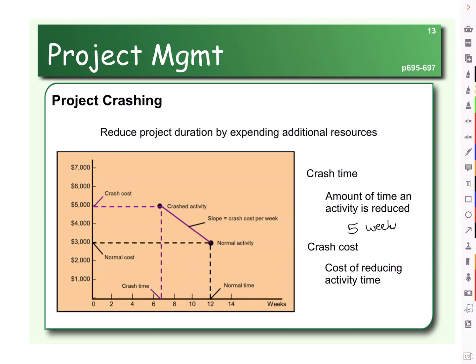Well, if the total cost of cutting off that five weeks is $2,000, then the cost per week would be the $2,000 cost divided by the five weeks. And if we do that, then it'll cost us $400 for every week we shave off of activity one in building our house.